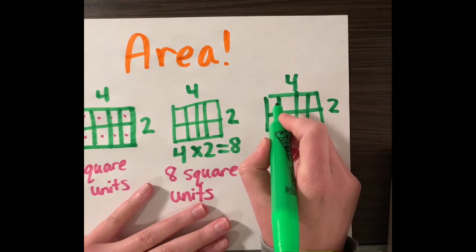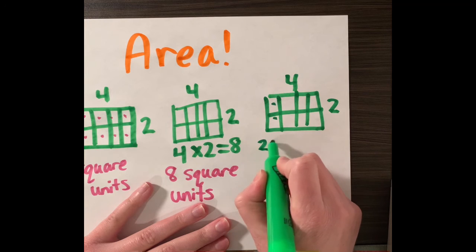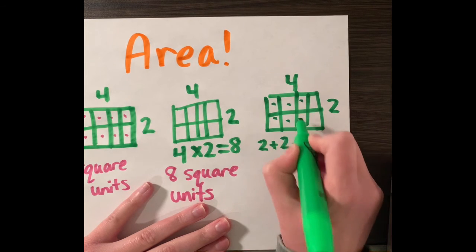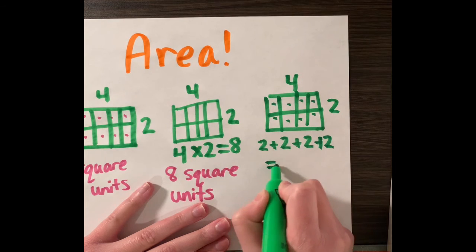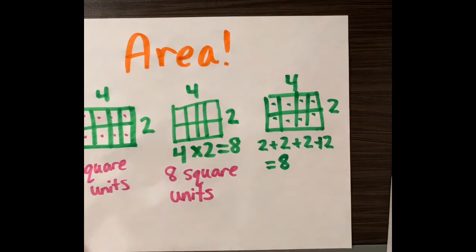I chose to do two plus two plus two plus two. You could also do four plus four and get the same answer. Once again we reach eight square units.